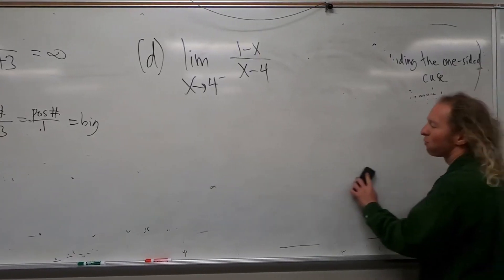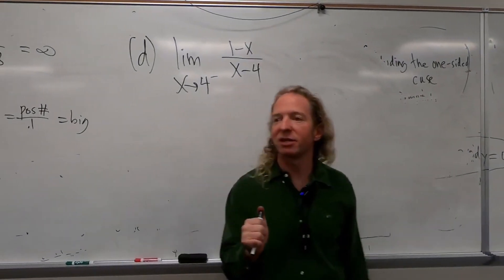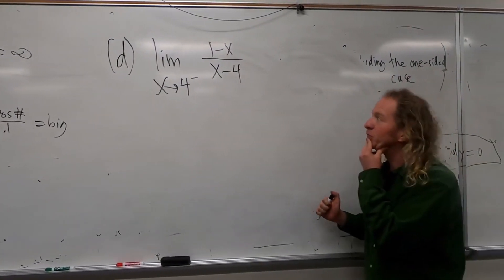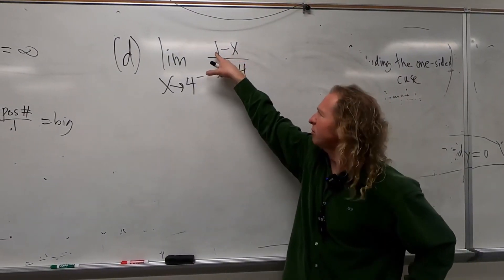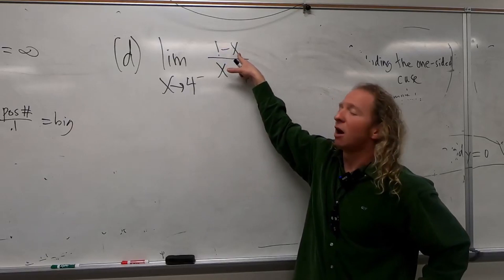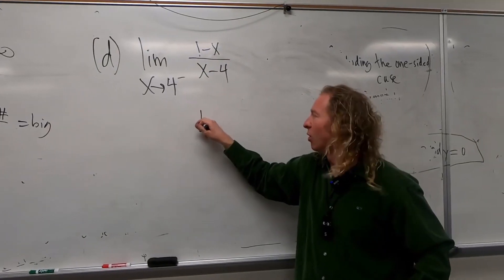Over x minus 4. So 1 minus x over x minus 4. So you can actually plug in the 4 in the numerator this time. So you get 1 minus 4, you get negative 3.